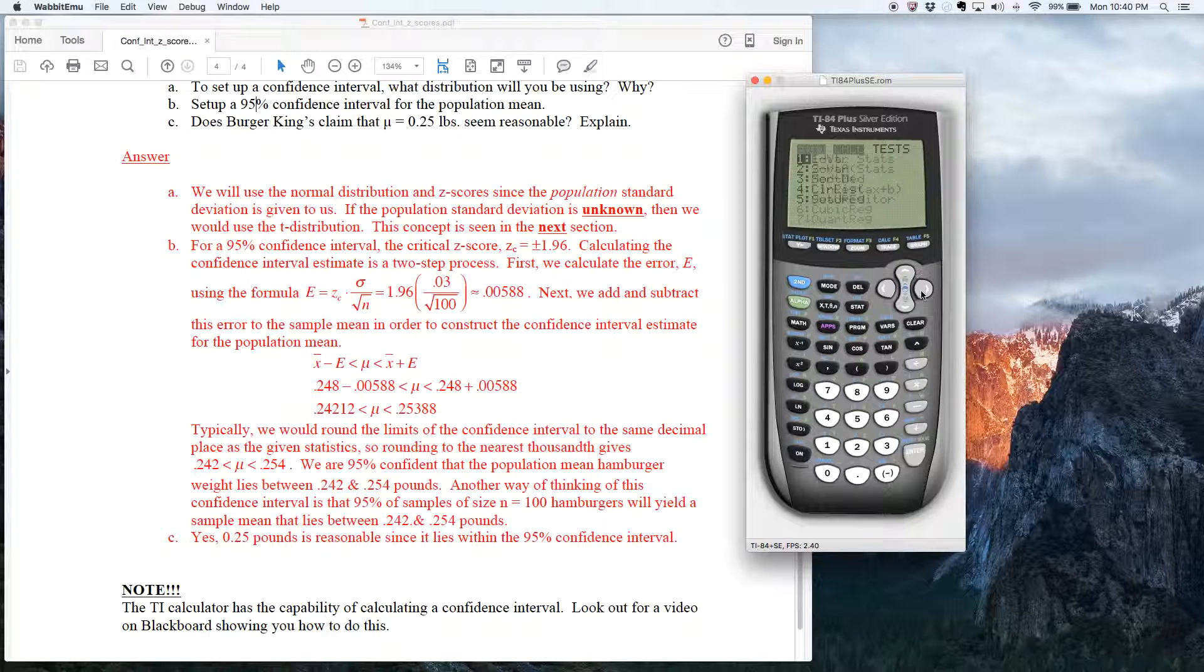You go to stat, move over to tests, choose option seven for z interval. And that's how you estimate the confidence interval, the population mean, with a confidence interval using z-scores. If you have any questions, shoot me an email. Thanks.